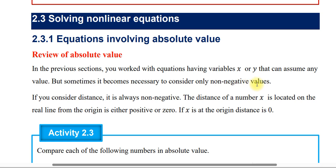In the previous section, you can see linear equations. X is the variable. If you consider a distance, it is always positive. The distance of the number x located on the real line from the origin is either positive or zero. The distance of the number x is not negative because it's a distance.